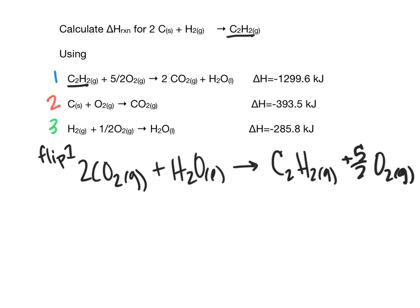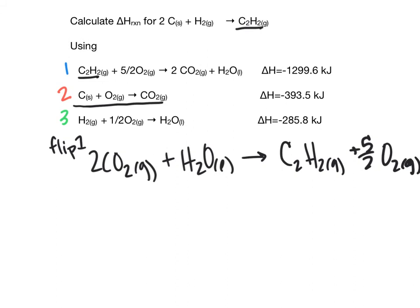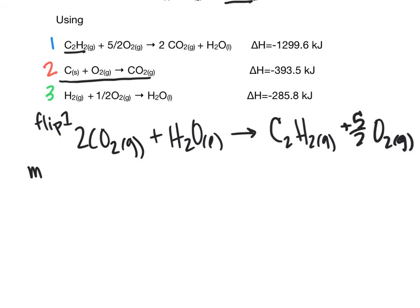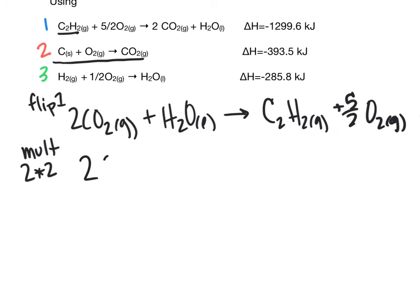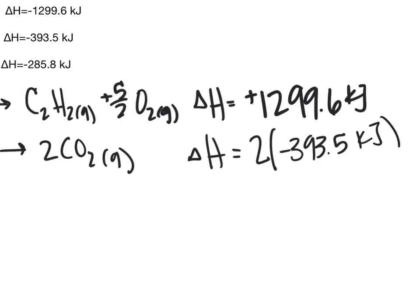Now let's look at equation two, thinking about it apart from equations one and three. The only part of the equation that's present is the carbon, and we need to multiply equation two by two in order to get the carbon to match. So multiplying by two: 2 carbon solids plus 2O2 gas gives us 2CO2 gas. Everything gets a stoichiometric coefficient of 2, and delta-H reaction is now two times negative 393.5 kilojoules, which equals negative 787 kilojoules.